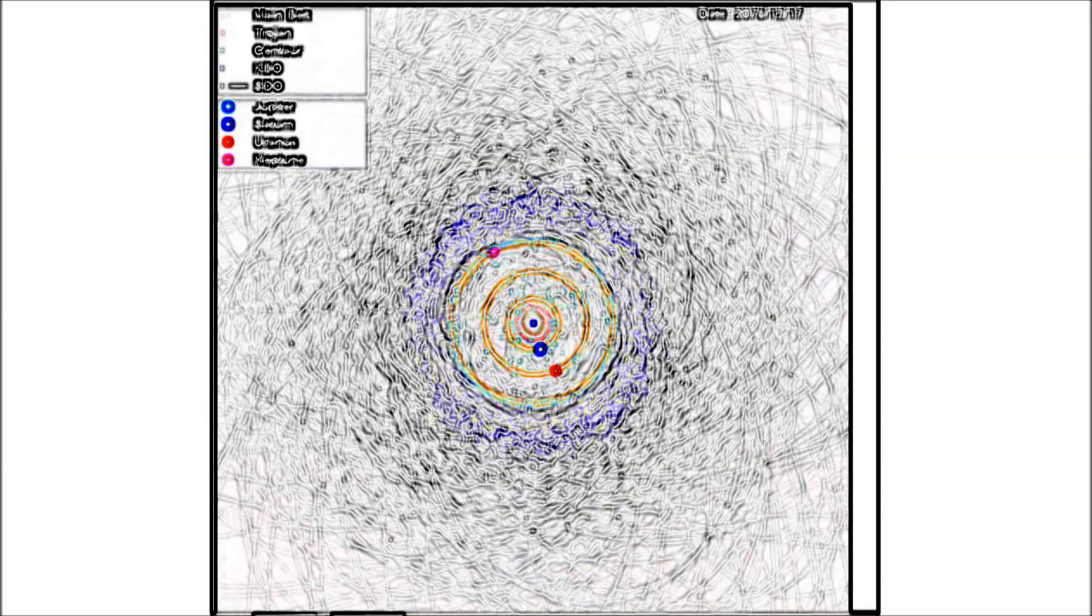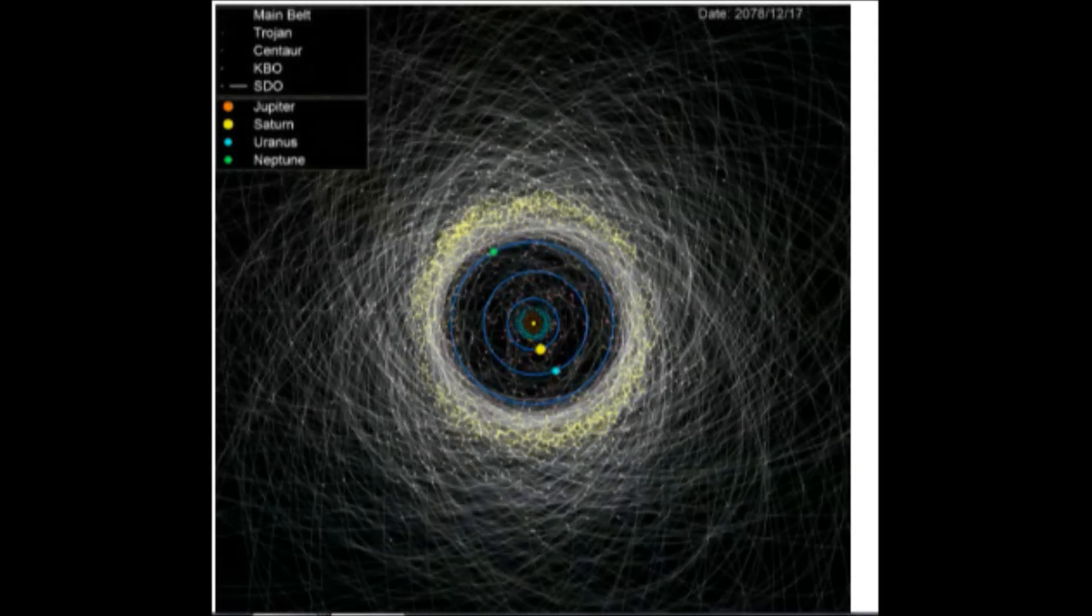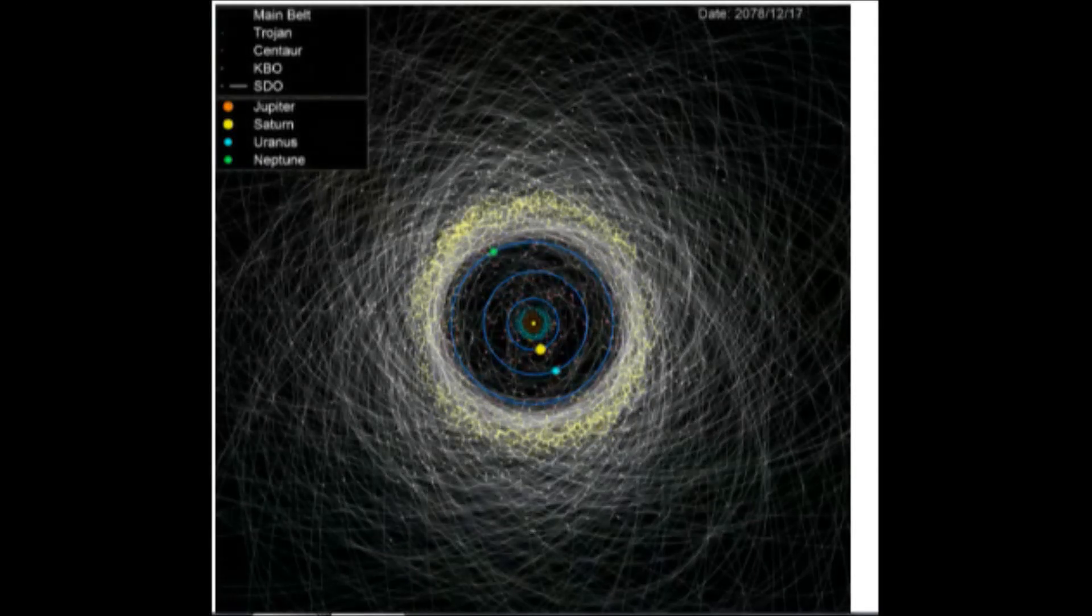These are all comet orbits. The comet orbits take on a pattern, and they're symmetrical in many cases. These are not Jupiter family comets. These are long period comets.